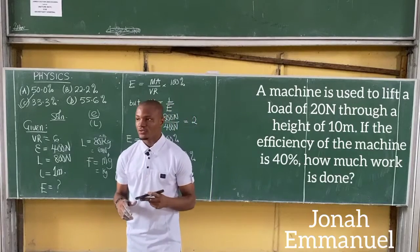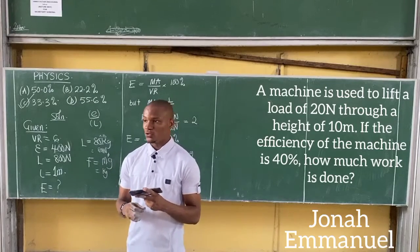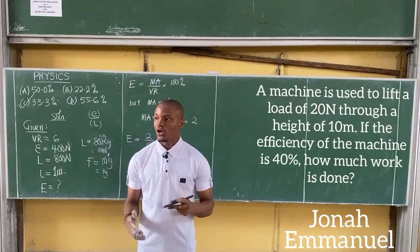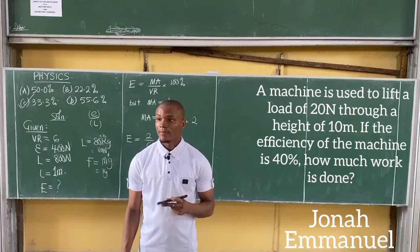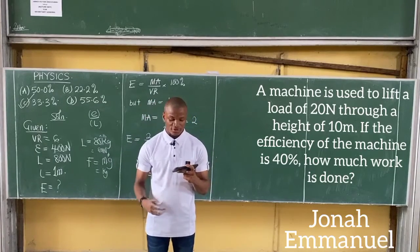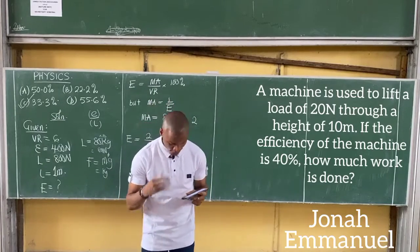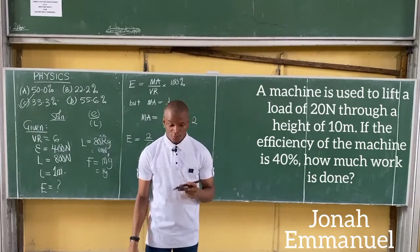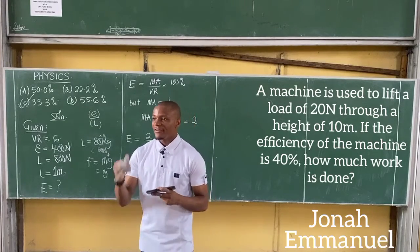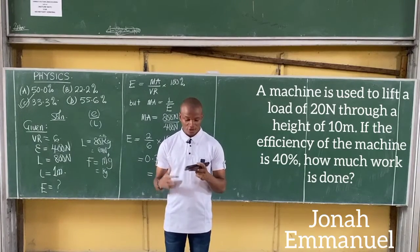Alright, Example 2. A machine is used to lift a load of 20 N through a height of 10 N. If the efficiency of the machine is 40%,